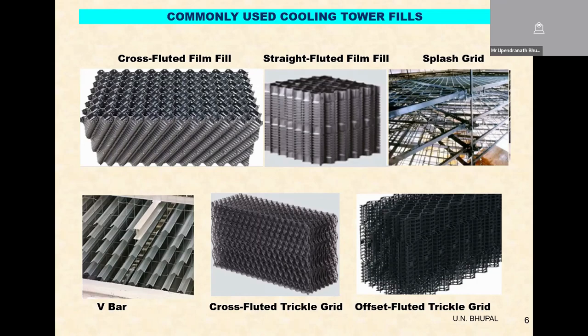The next fill on the right-hand side is a splash fill called a splash grid. It has high voidage — the mesh is 50 by 50 centimeters — so the interaction between air and water is very poor, meaning the thermal performance of this splash grid is poor. But the anti-fouling characteristics are fantastic compared to film fills. It's basically a compromise between thermal performance and anti-fouling characteristics. Based on the water quality of the makeup water and the availability of a water treatment program, a compromise has to be struck between thermal performance and anti-fouling characteristics required.